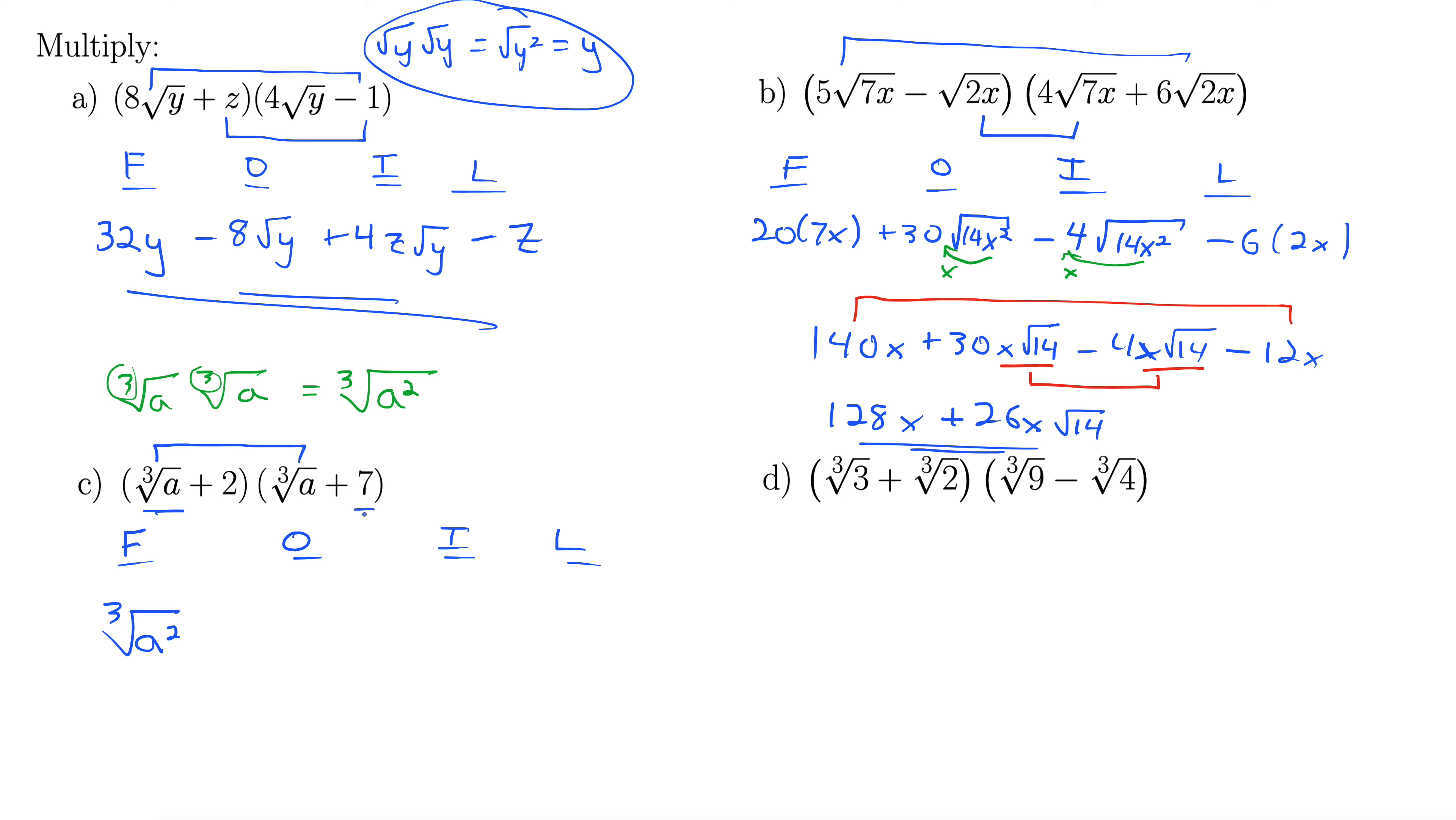The outside terms, so that looks like plus 7 cubed root of a. Inside, plus 2 cubed root of a. And then our last, 2 times 7 is 14, so plus 14. It looks like we have some like terms here. We have a cubed root of a and a cubed root of a, so let's combine these two. Nothing else combined, so we're left with cubed root of a squared, plus 7 plus 2 is 9 cubed root of a, plus 14. Note that we cannot combine the cubed root of a squared with the cubed root of a. Those radical terms have to match exactly to be able to combine them as like terms.